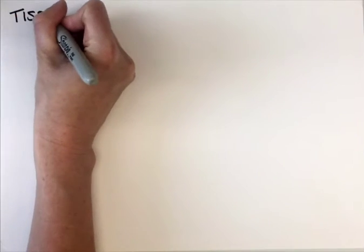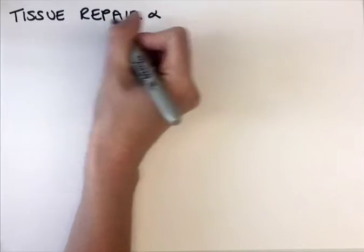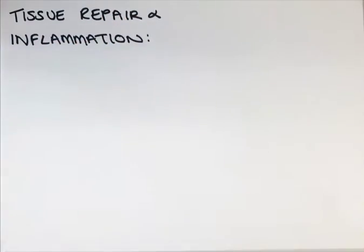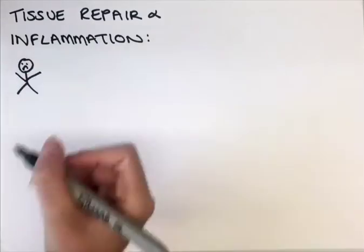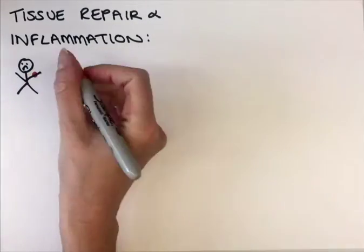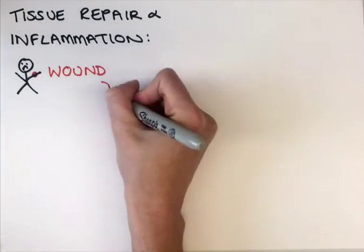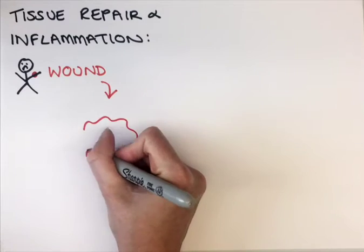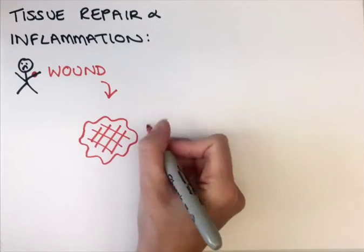In the lab, we're interested in understanding exactly how our bodies are able to repair themselves when we become injured. When there is damage to our body, for example our skin, our bodies must act fast to repair and seal the wound.